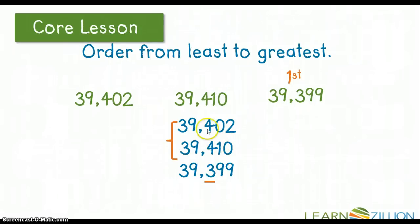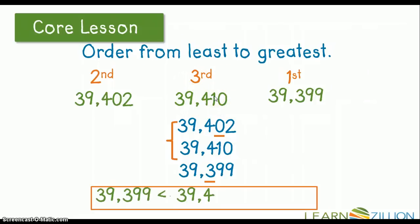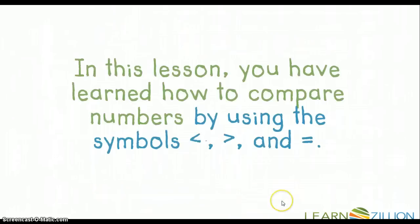Then I have the two remaining numbers to worry about. Each of them has a 4 in the hundreds place, but when I go to the tens place I notice that 39,402 has a zero in the tens place, so that would be the second least. That leaves 39,410 as the greatest number. I can write this as a number sentence using the less than symbol: 39,399 is less than 39,402 is less than 39,410. In this lesson, you have learned to compare numbers by using the symbols less than, greater than, and equal to.